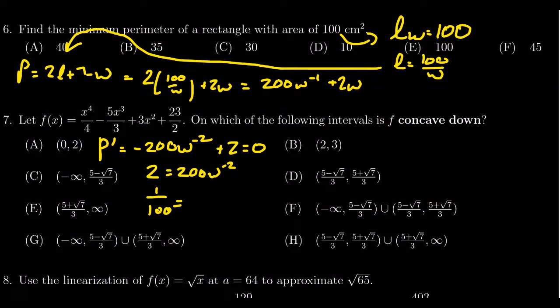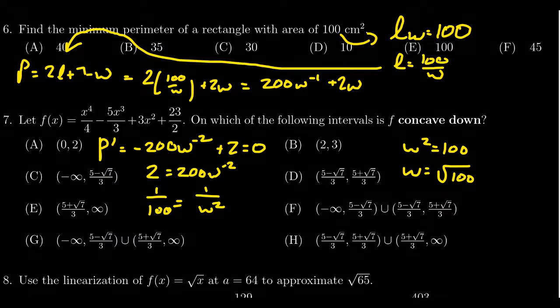This is equal to W to the negative two. But what does the negative power mean? It means one over W squared. So taking the reciprocal, we get W squared equals 100. Taking the square root, we get that W equals the square root of 100, which is equal to 10.